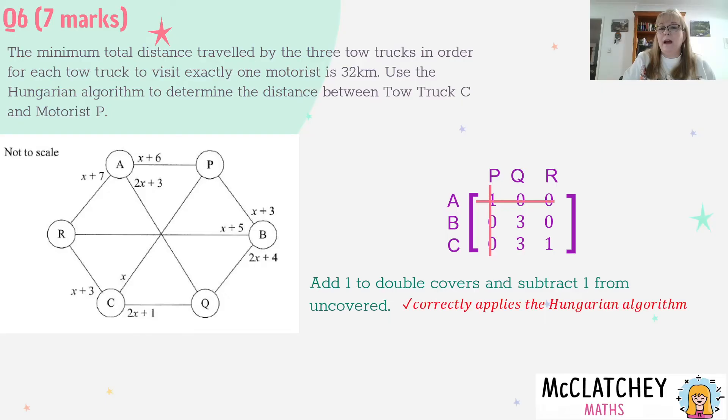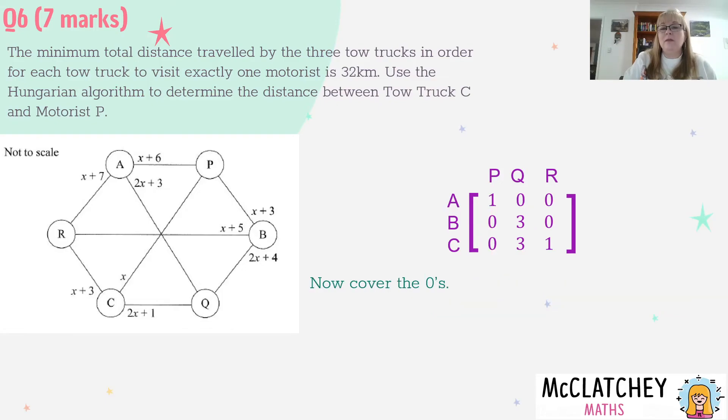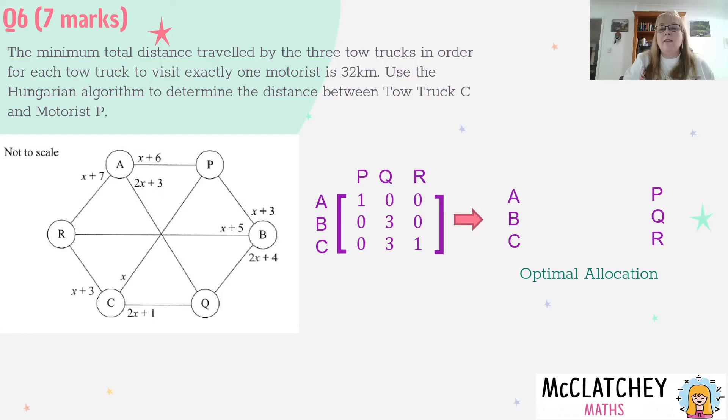We've applied the Hungarian algorithm. We get our fourth mark. Let's see now how many allocations when we cover those zeros again - we've got three, which is the right number of allocations, which means we've found the optimal allocation. Now what we need to do is translate this and communicate what our optimal allocation is. I like doing it as a bipartite graph. I think that's a nice way to show the optimal allocation.